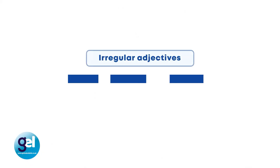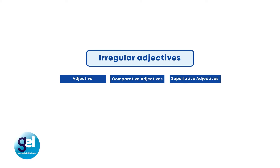Let's have a look at some highly irregular adjectives. Good — the comparative adjective of good is better and the superlative adjective of good is the best. If we look at bad — the comparative adjective is worse and the superlative adjective is the worst. Always try to focus your students' attention on the differences between regular and irregular adjectives to stop them making mistakes.